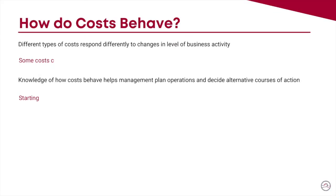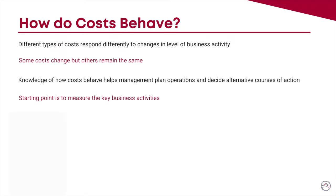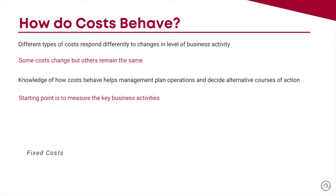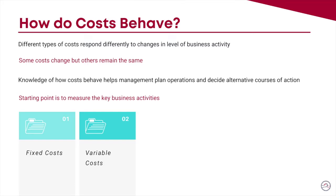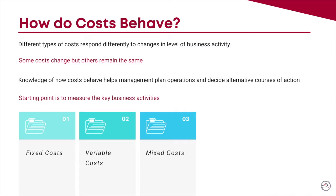Let's explore how costs behave at different levels of organizational activities. Managers and decision makers classify organizational costs differently to understand how they behave at varying levels of activity and make decisions based on such analysis. For example, fixed costs are costs that do not change with increases in business activity. Variable costs tend to increase or decrease in proportion to an increase or decrease in business activity. Mixed costs have elements of both fixed and variable costs.